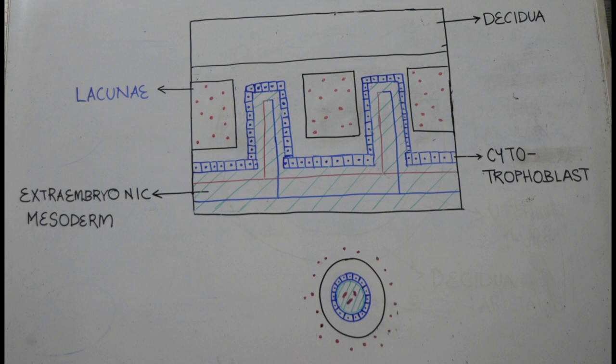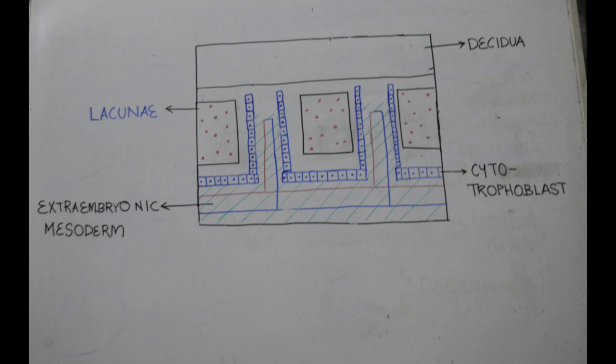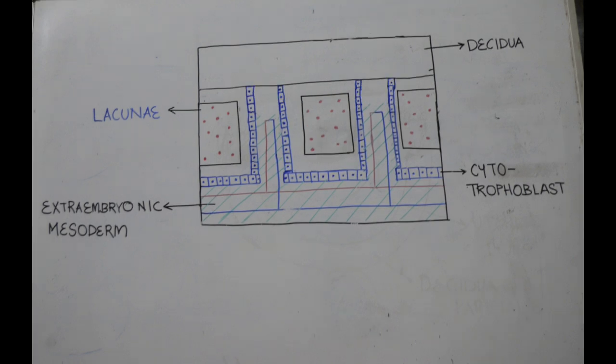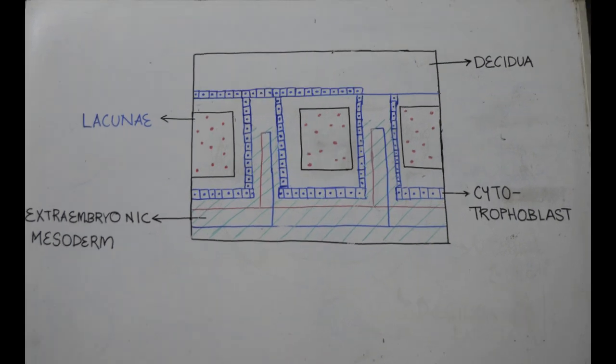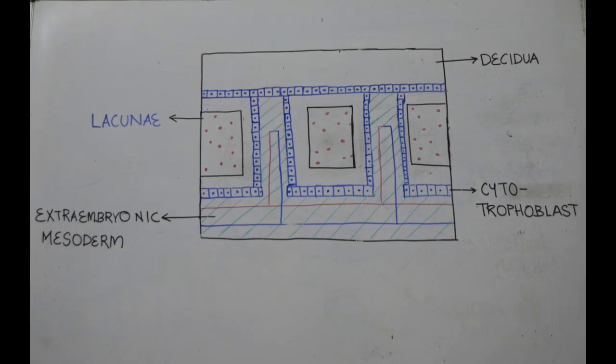The cytotrophoblast emerges through the syncytium of each villus. The cells now spread out to form a layer that completely cuts off the syncytium from the decidua. This layer of cells is called the cytotrophoblastic shell.